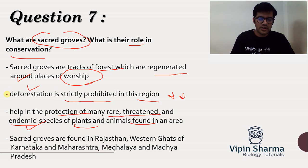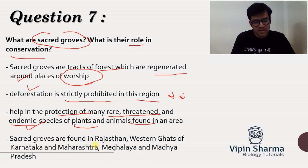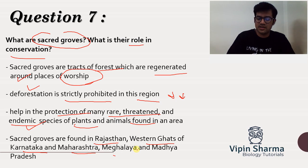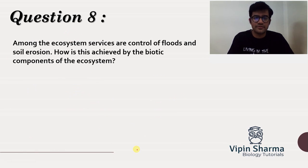Here are some examples of where sacred groves are found: Rajasthan, the Western Ghats of Karnataka, Maharashtra, Meghalaya — sacred groves are found in all these areas.